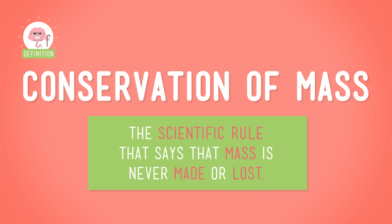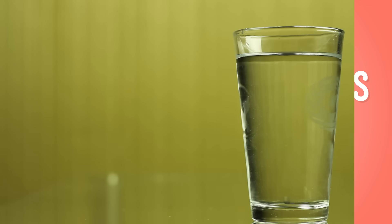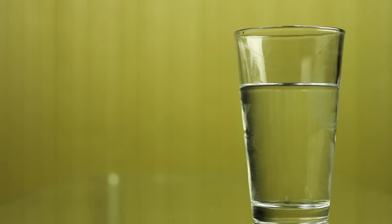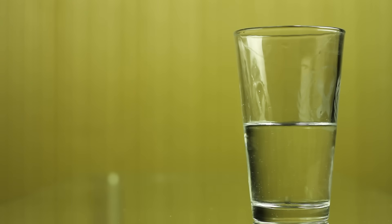Matter can change, but what matter can't do is just appear or vanish. And since all matter has mass, this means that mass can't appear or vanish either. Scientists have been experimenting with this idea for hundreds of years. Lots of experiments have provided evidence of what we call the conservation of mass — the scientific rule that says the mass, or the amount of matter in an object, is never made and never lost. So what about the water from my glass? Well, it didn't just disappear. As the water evaporated, its molecules became mixed in with the air molecules, so it went through a physical change. It's still there, but we just can't see it anymore.